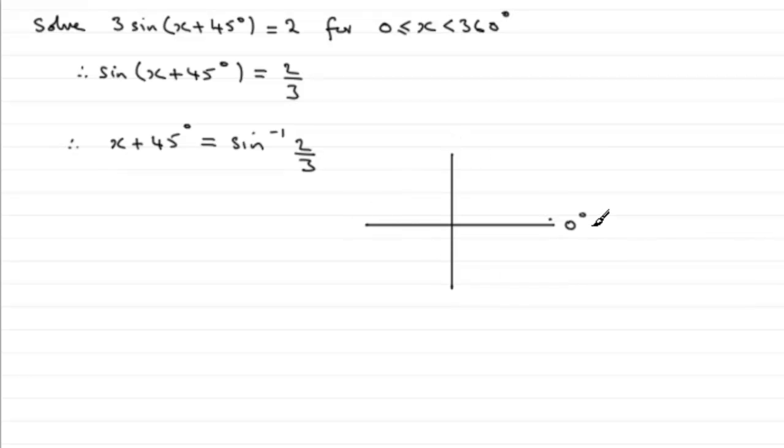This would be 0 degrees, we're working in degrees, this would be 90, 180, 270, 360 degrees again. And we have got the sine of an angle equals a positive value, 2/3 being a positive value. So we should be familiar with this: all trigonometric functions are positive in the first quadrant and sine is only positive in the second quadrant. So it's the first and second quadrants that we need to draw a line in.